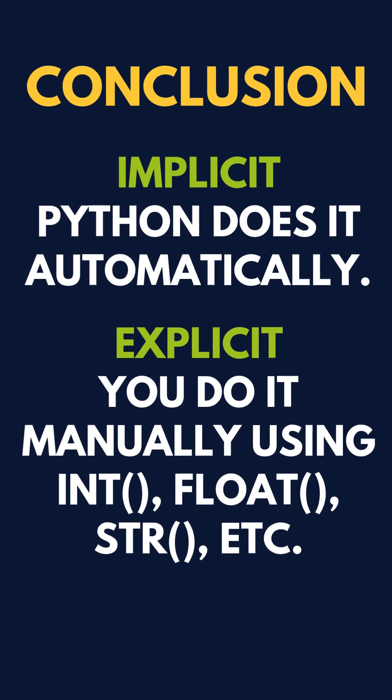Now the conclusion is that implicit typecasting is when Python does it automatically. And what is explicit? When we do it manually using integer, float, string, etc.